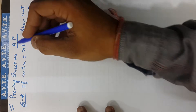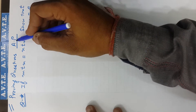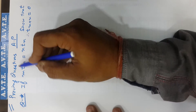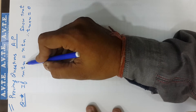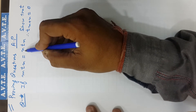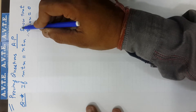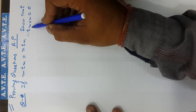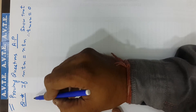Hello friends, today we are going to solve a question in arithmetic progression. If m times the m-th term is equal to n times the n-th term, we have to prove that the (m+n)-th term is 0.